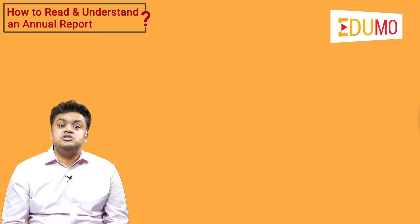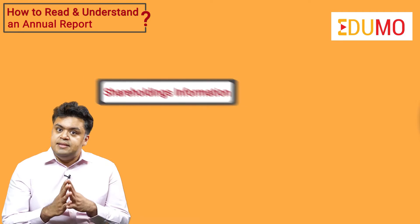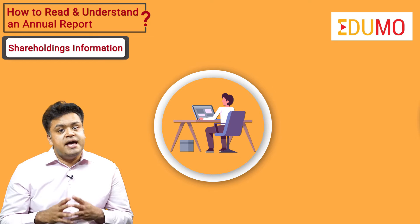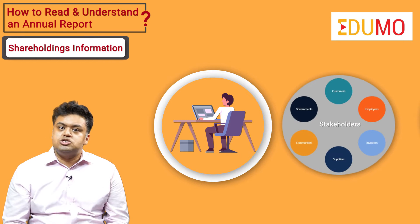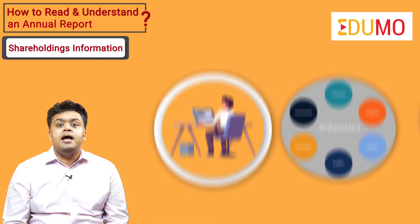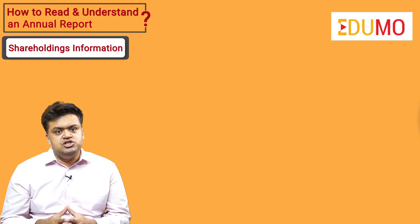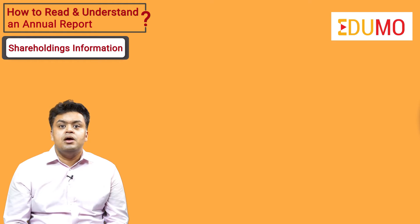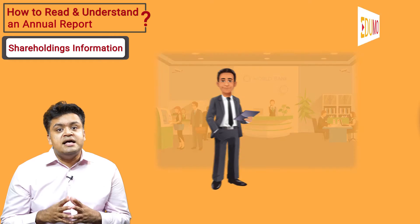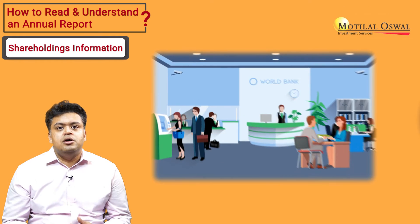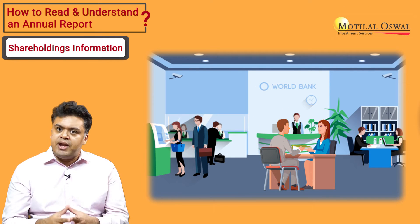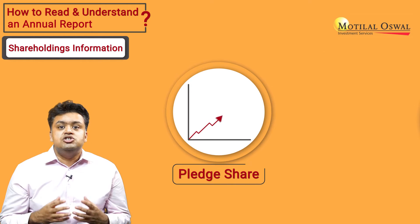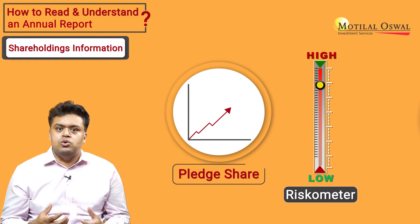The next is Shareholding Information. In this section, investors need to check if there is any change in the top stakeholders of the company, and also should look into the change in pledge share of the promoter, if any. Promoters use their shares as collateral to raise funds from banks and financial institutions. Rising pledge shares create risk for the shareholders.